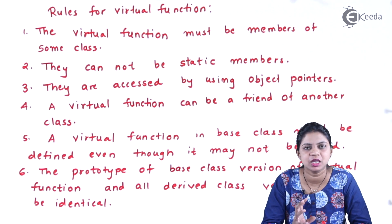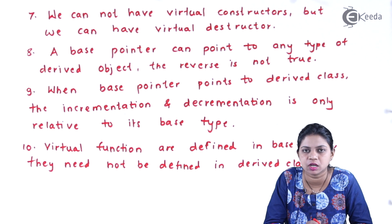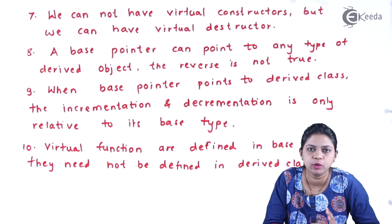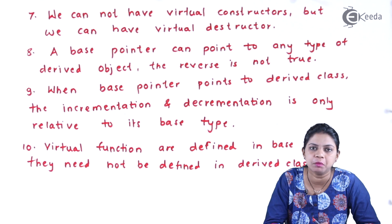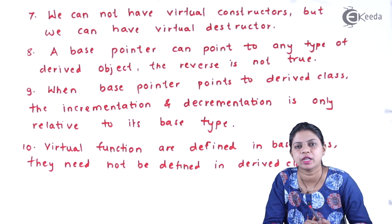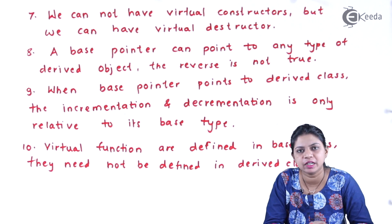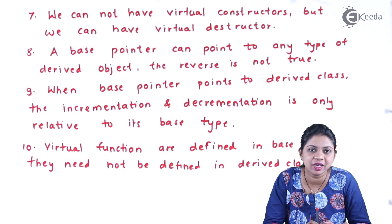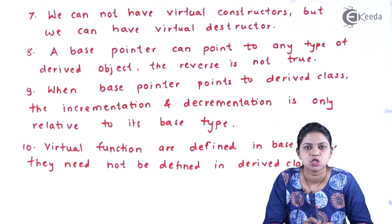Rule 7: we cannot have a virtual constructor, but we can have a virtual destructor. Rule 8: a base pointer can point to any type of derived object, but the reverse is not true — you cannot create a pointer to a derived class and point it to a base class. When a base pointer points to a derived class, incrementation and decrementation is only relative to its base type. Finally, virtual functions defined in the base class need not be redefined in the derived class — only the base class functions are treated as virtual. This concludes our discussion on virtual functions and runtime polymorphism.